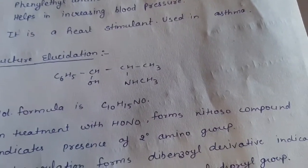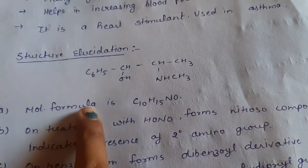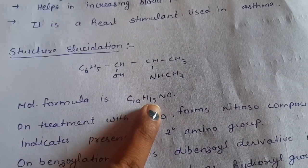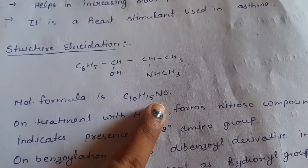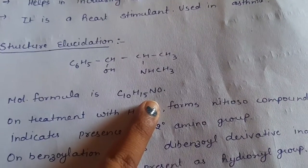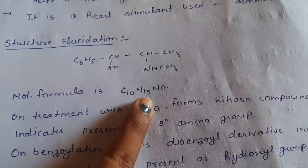So first point in its structure elucidation is its molecular formula is C10H15NO. And we get this information through mass spectrophotometry to determine the molecular formula.